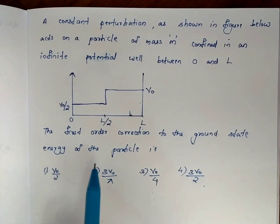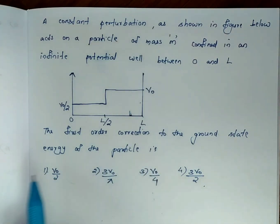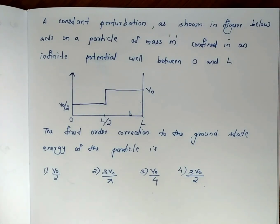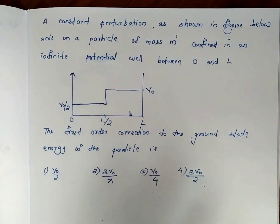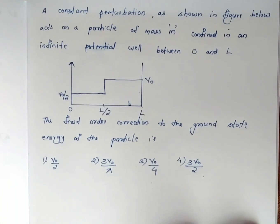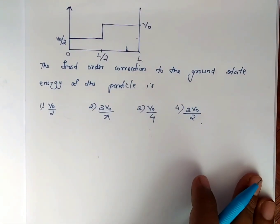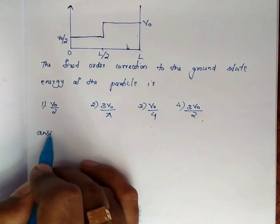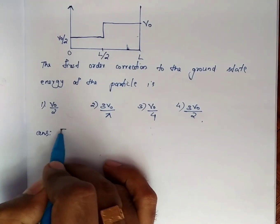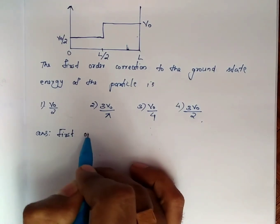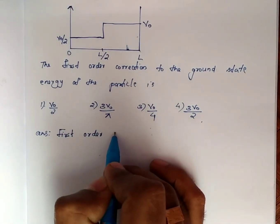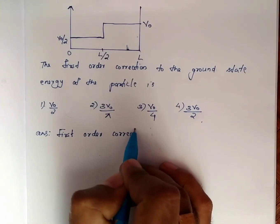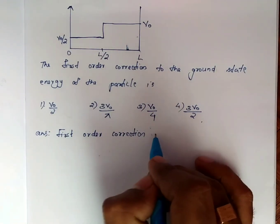Now we need to calculate the first order correction to the ground state energy. The first order correction to the ground state energy is what we are computing here.